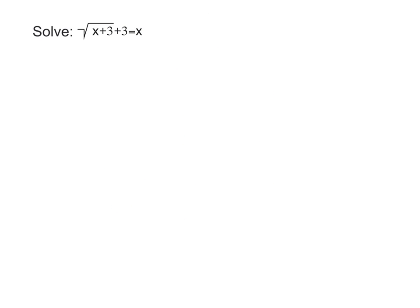In this next example we have the square root of x plus 3 plus 3 equals x. The first thing we want to do is isolate the radical by moving positive 3 over to the right side. Because it's positive 3, we subtract 3 from both sides, leaving us with the square root of x plus 3 on the left equal to x minus 3 on the right.